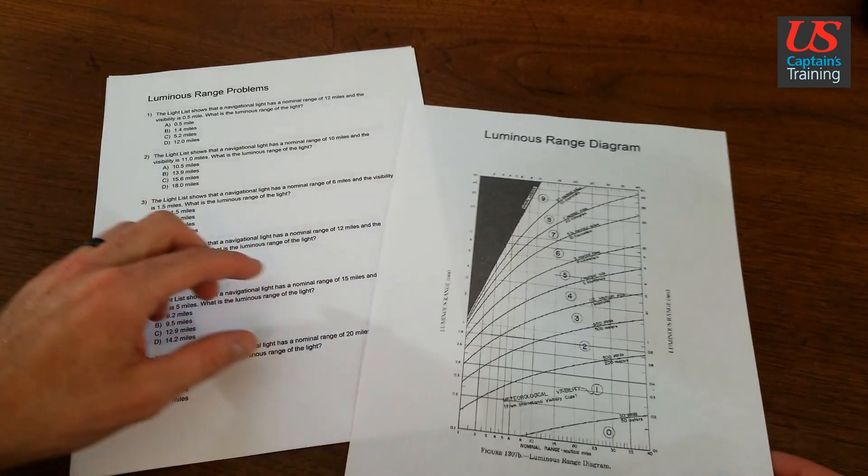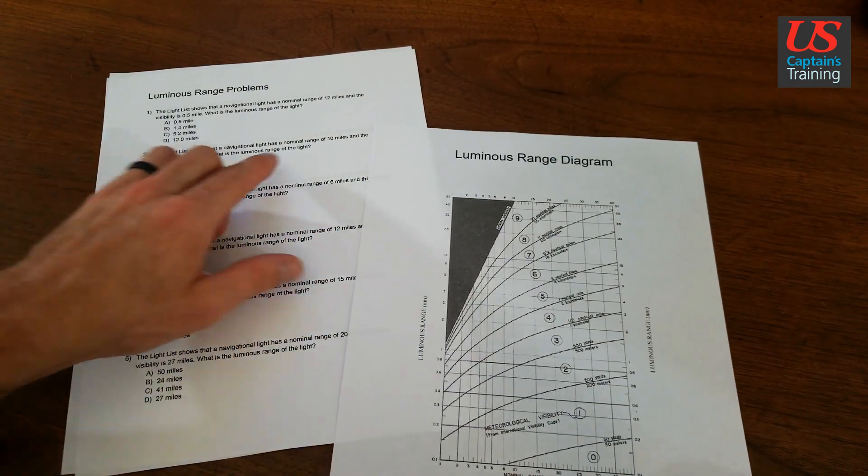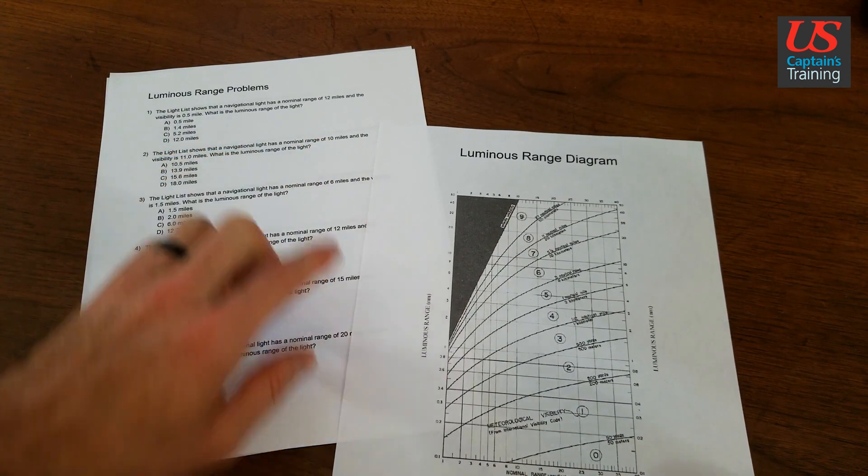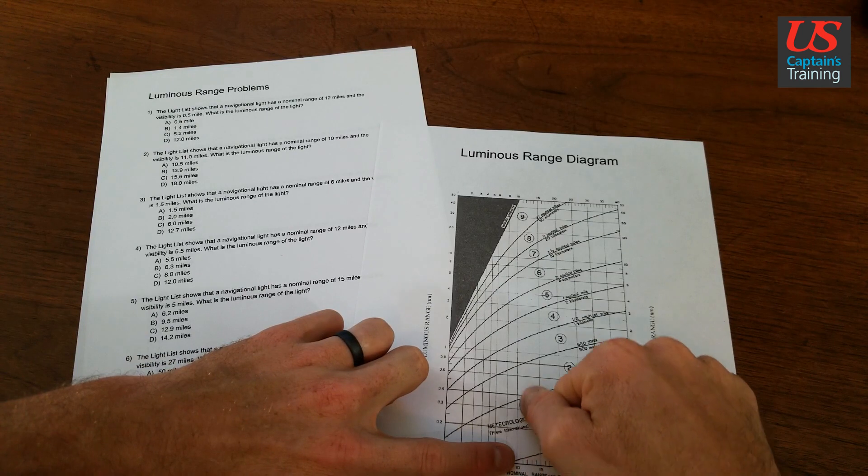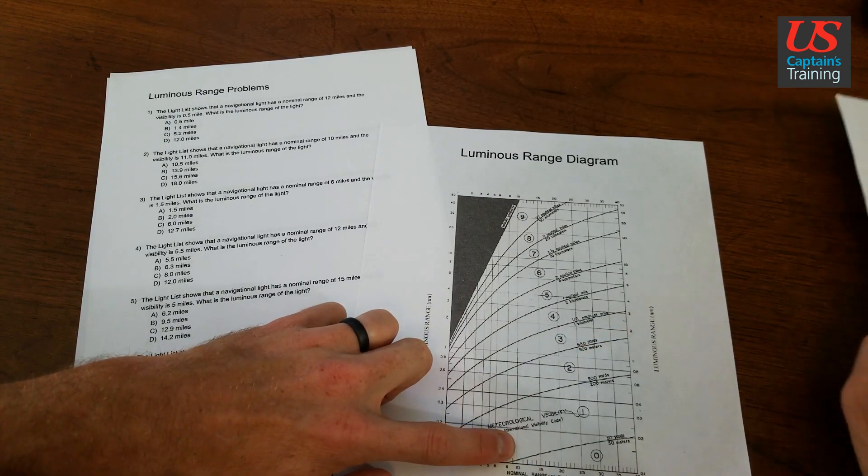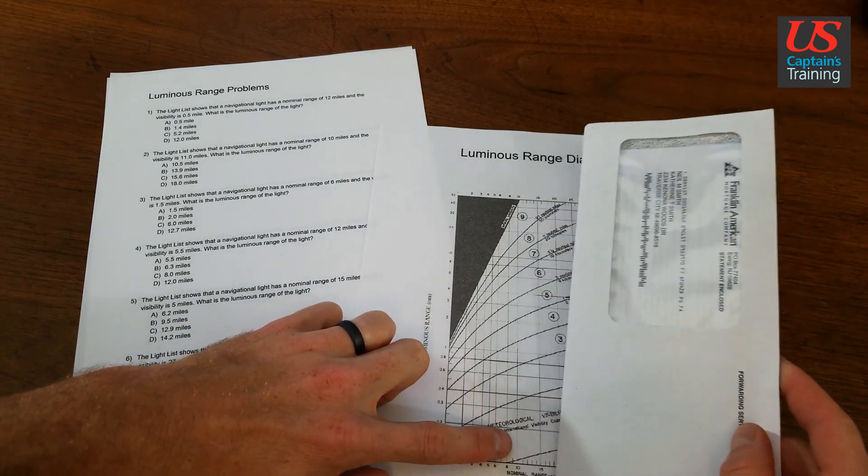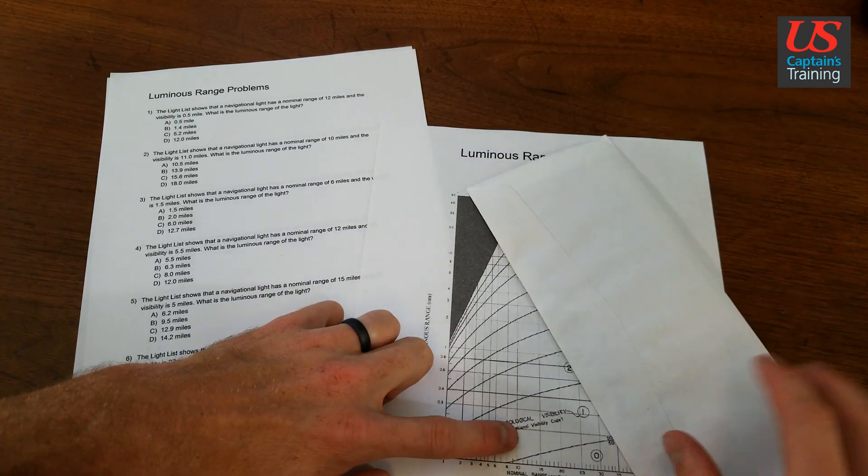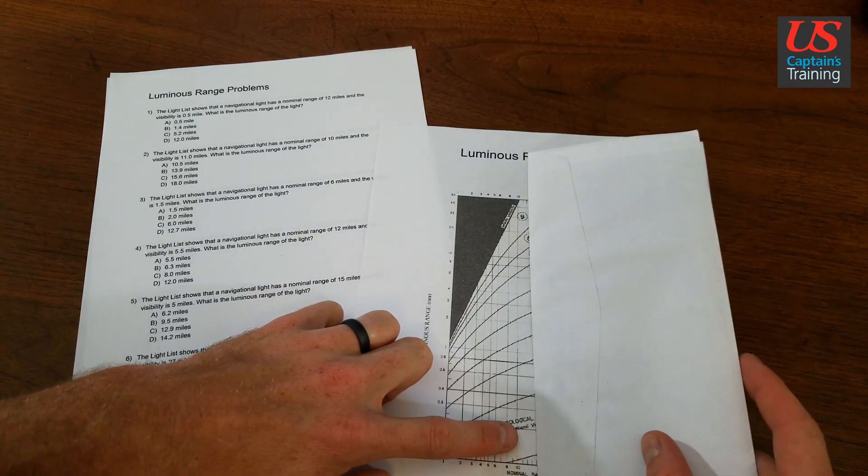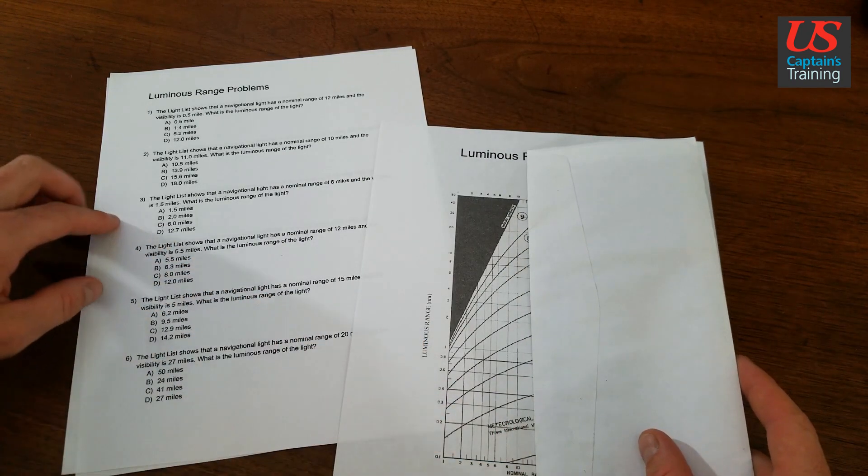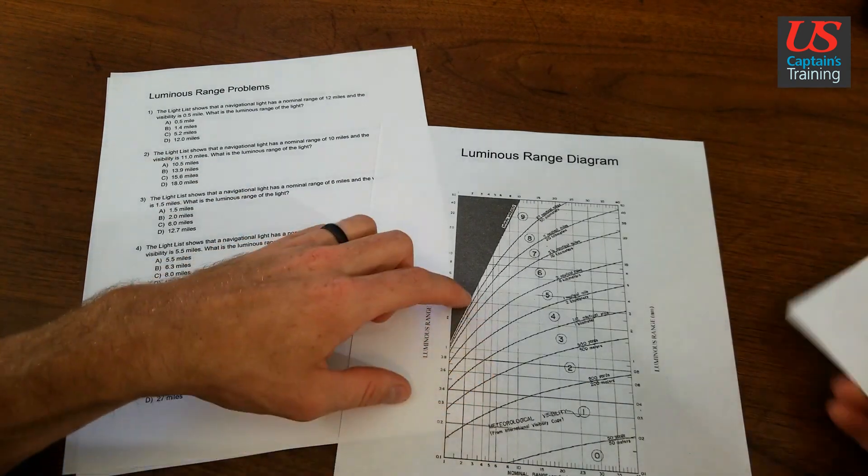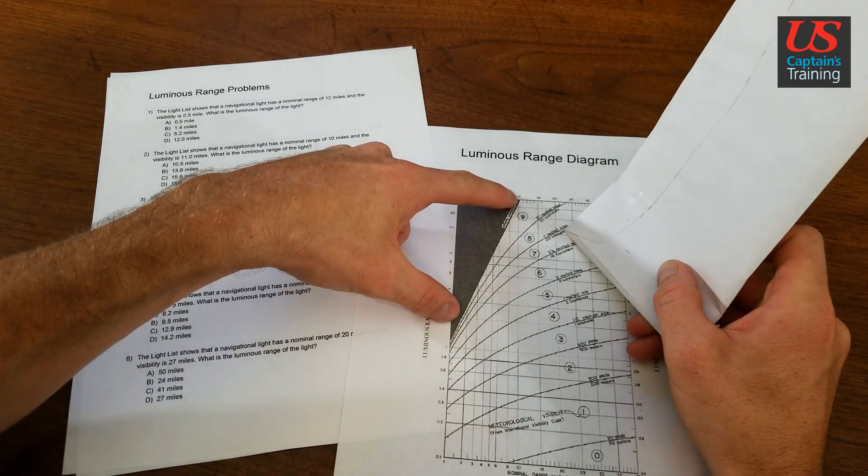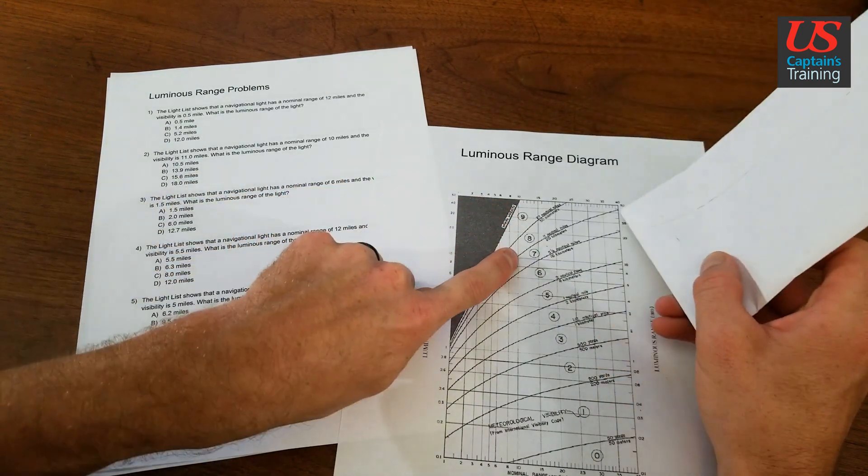Come to our luminous range diagram and we follow a nominal range of 10 miles up. Here we are, and visibility is 11. So 11 nautical miles, where does it intersect the 10? Right there.